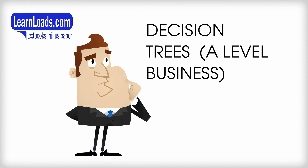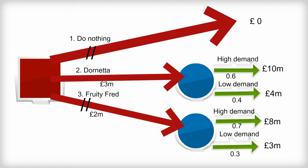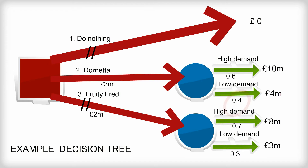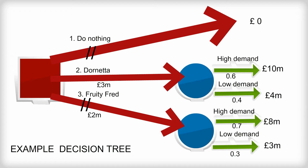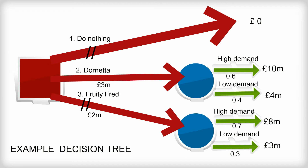Decisions, decisions, decisions. We all know that it's sometimes hard to decide between options. To help in this process, a business might use a simple diagram known as the decision tree. A decision tree can be used where the cost of investment and the return on that investment can be estimated, and the probability of different things happening can be worked out. A decision tree shows the options and the possible outcomes associated with each option, and calculations using it can help choose the best option.